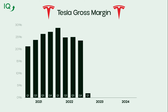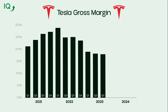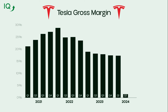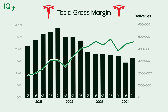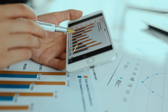Whether the margin is improving, staying stable, or declining matters significantly. If a company's gross margin has been steadily improving, it could be a sign that it's becoming more efficient, reducing production costs, or gaining pricing power — a positive signal for investors. On the other hand, a declining gross margin over time might indicate rising production costs or competitive pressures forcing the company to lower its prices.